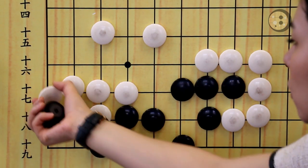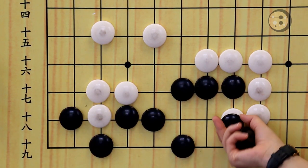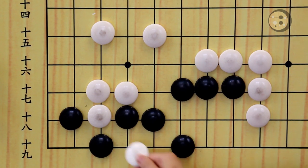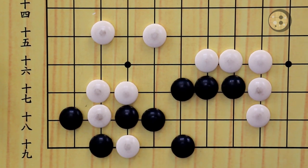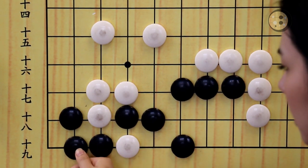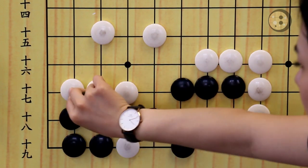The tasuji for this question is play the tiger's mouth first. And after your opponent throws in, you've got to be very careful. Don't capture, instead connect and make the eye in the corner.